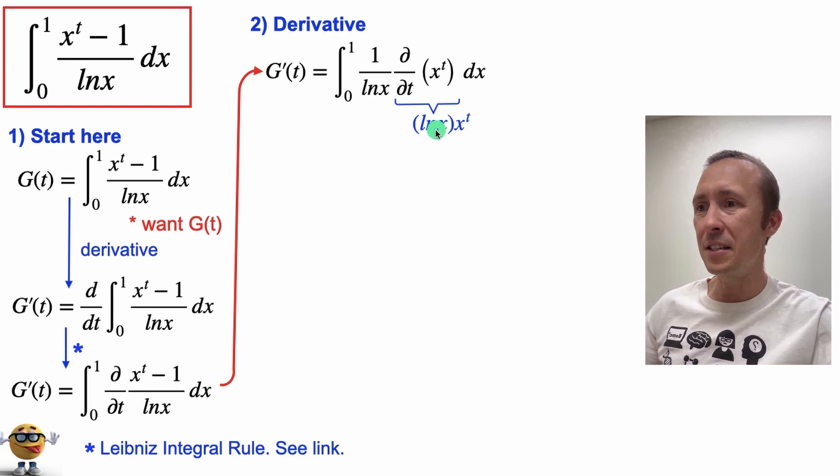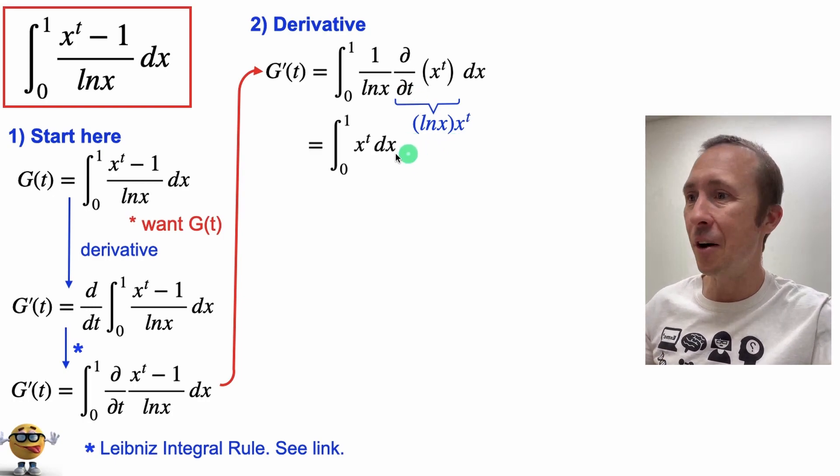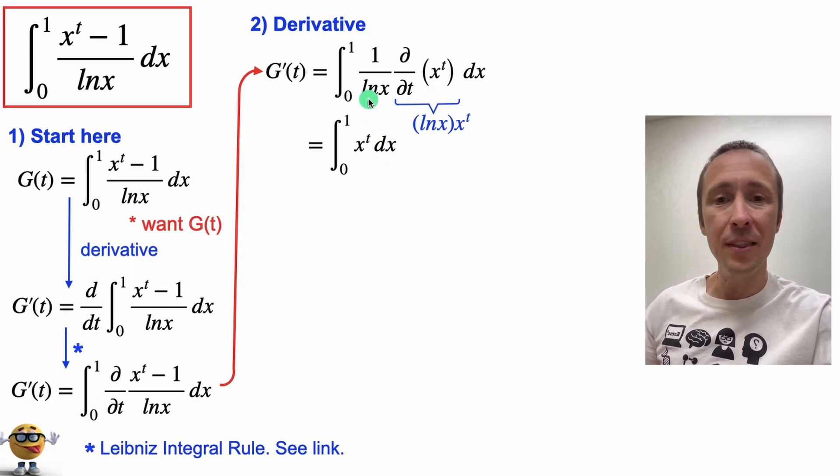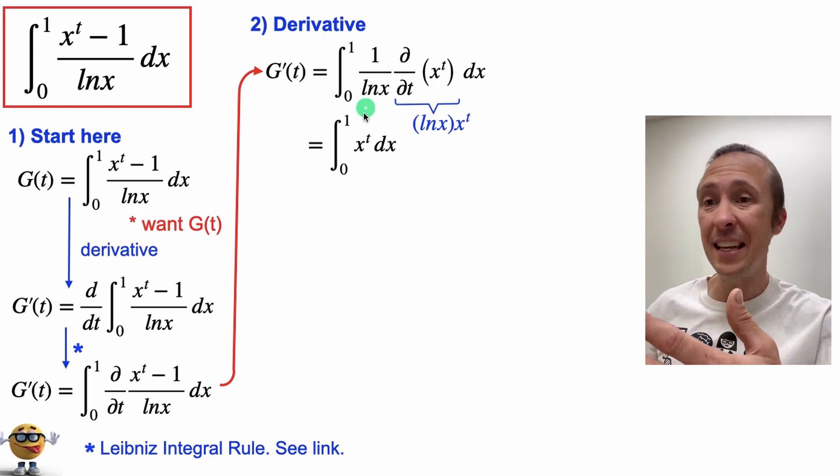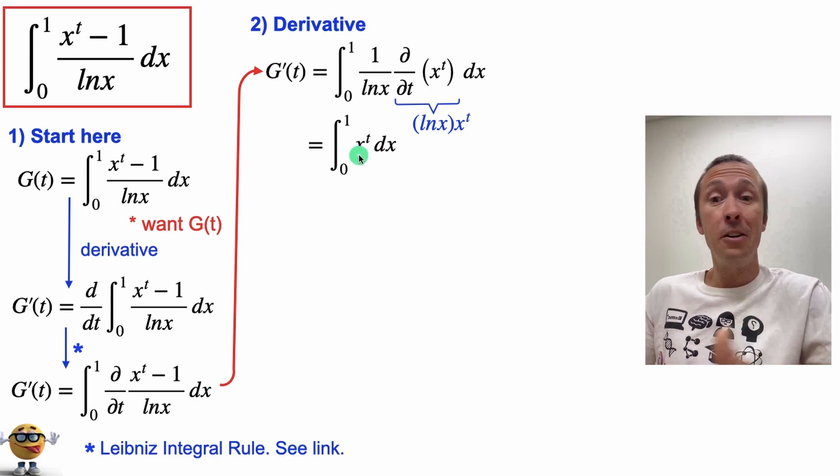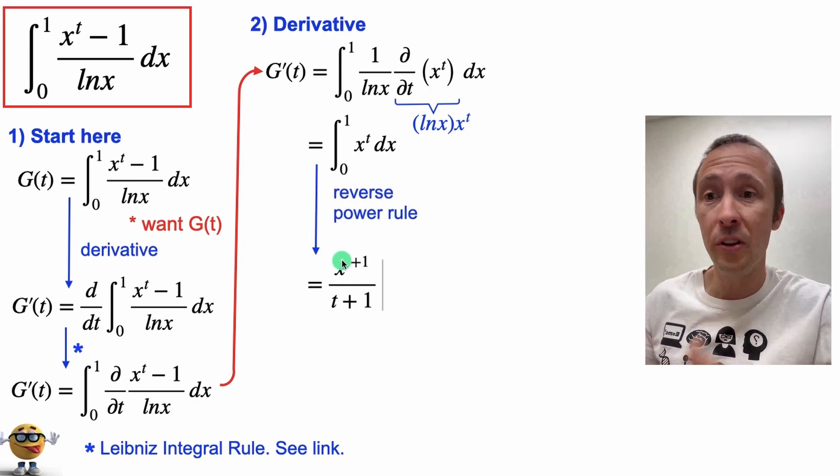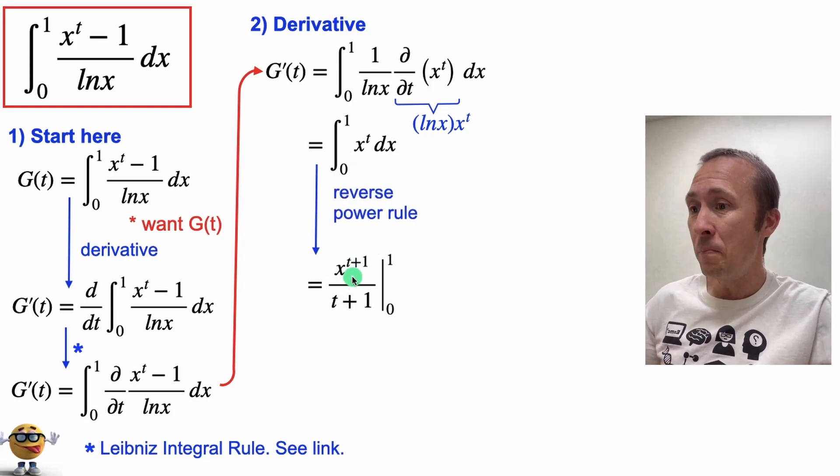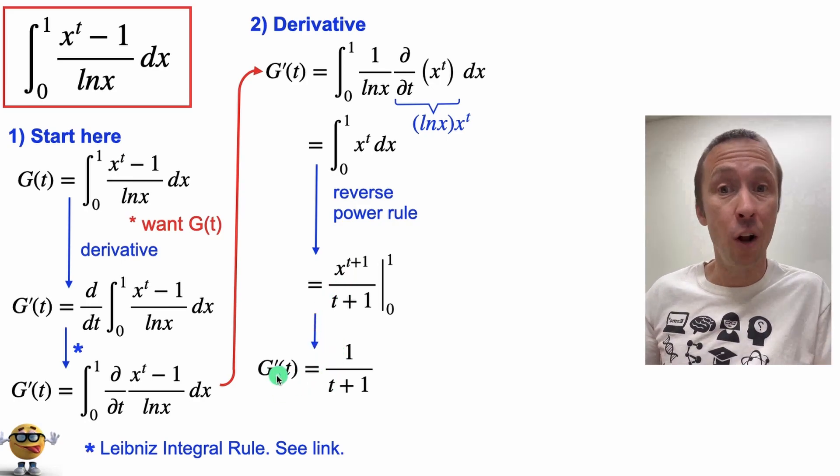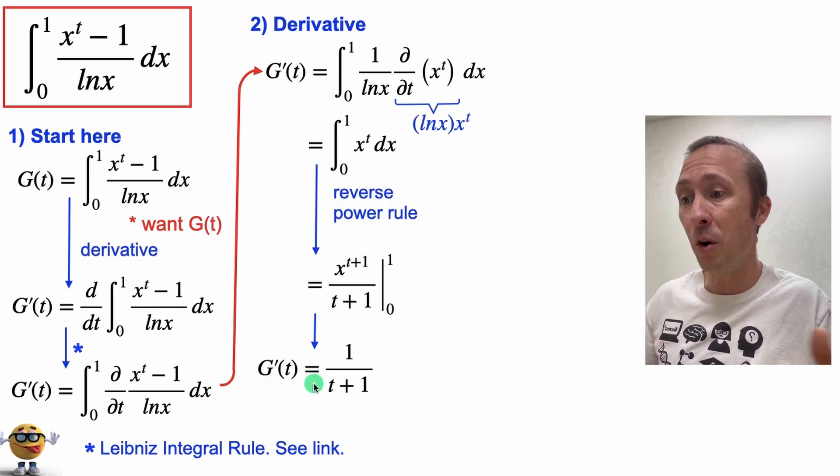Let me know if you want me to derive this. It's not too bad. It's pretty easy and this my friends is like one of the main reasons why we took the derivative. So check this out. ln x cancels out with this ln x and we're left with the integral of x to the t literally and we can just reverse power rule this which is cool and then we can plug in our limits of integration to get the derivative in all its glory, G prime t of 1 over t plus 1.